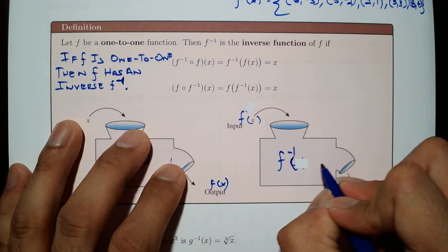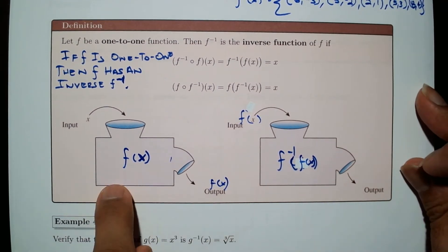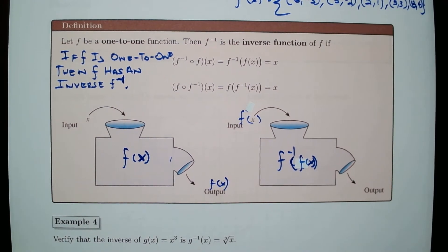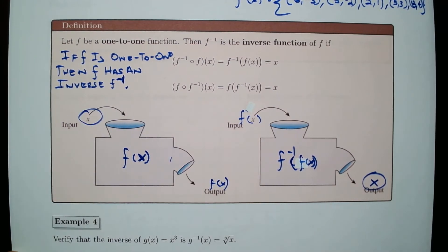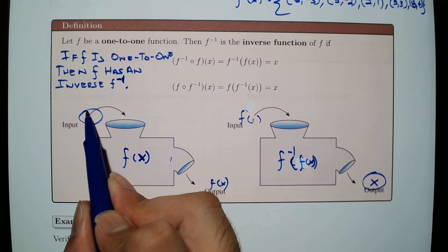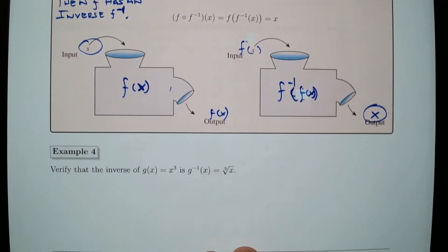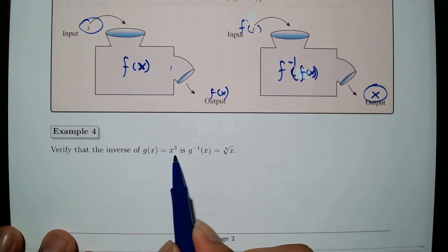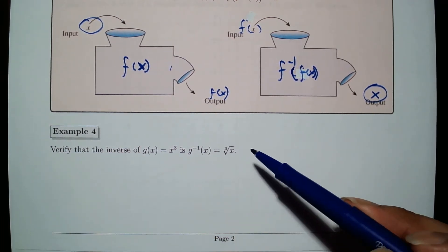You can think of the inverse function as undoing whatever the original function did. For example, adding 5 and then subtracting 5 — that's doing and undoing. We start with input x, pass it through f, then through f⁻¹, and we get back to x. So let's verify that the inverse of g(x) = x³ is g⁻¹(x) = ∛x. The inverse of cubing is taking the cube root, just as the inverse of multiplying by 2 is dividing by 2.